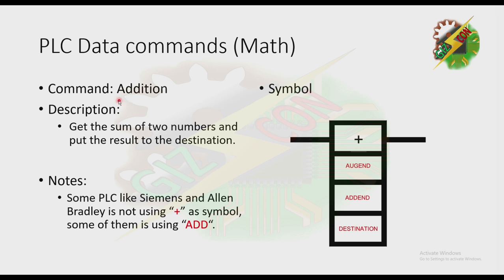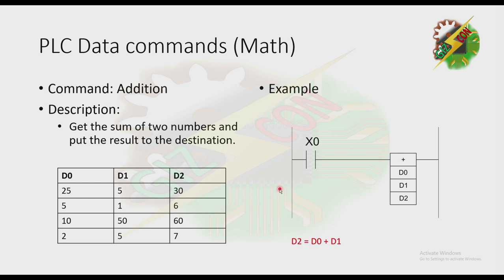Next we have the Addition command — it gets the sum of two numbers and puts the result to the destination. This is the symbol for addition. For example, if X0 is energized, the value of D0 will be added to D1 and the result will be moved to D2.